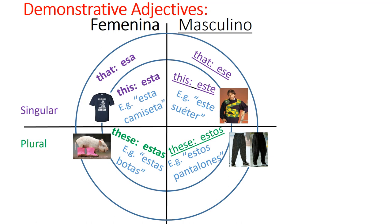For the feminine plural of 'those,' it's esas — just add an S to the singular form. So estas botas means 'these boots,' but esas botas means 'those boots.' The close-to-me form has a T; the far-away form doesn't. For the masculine plural, it breaks the pattern again and goes back to esos. So estos pantalones is 'these pants,' and esos pantalones is 'those pants over there.' Again, the close form has a T — estos — the far form does not — esos.